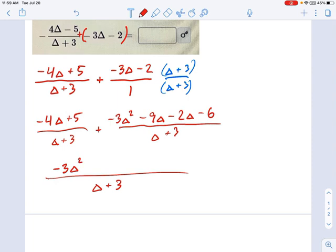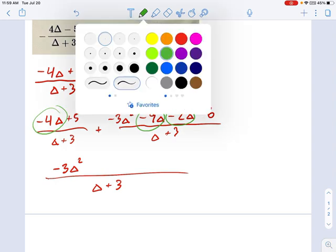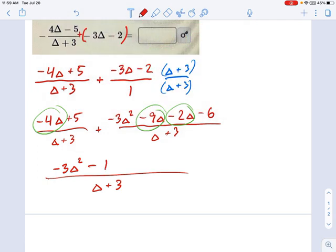I only have one delta squared term. It's the negative 3 delta squared. But let's count how many terms we have of regular deltas. Negative 9, negative 2, and negative 4. That makes negative 15, I think. So, I have negative 15 delta. And 5 minus 6 is negative 1.